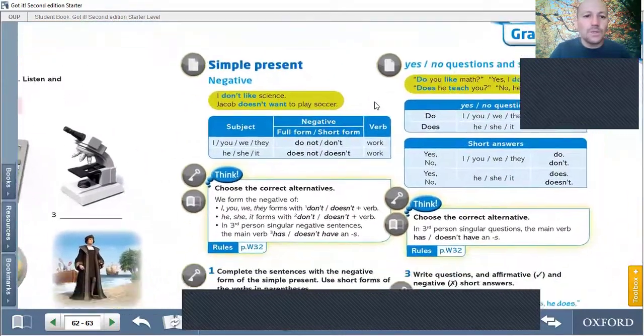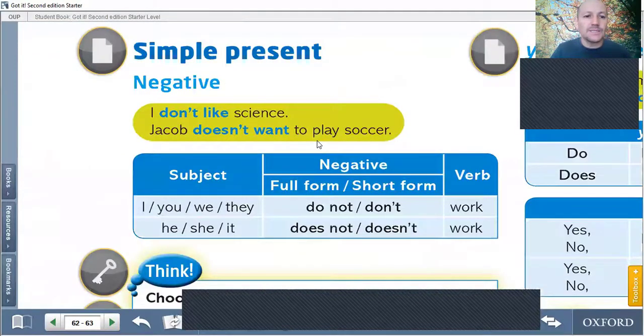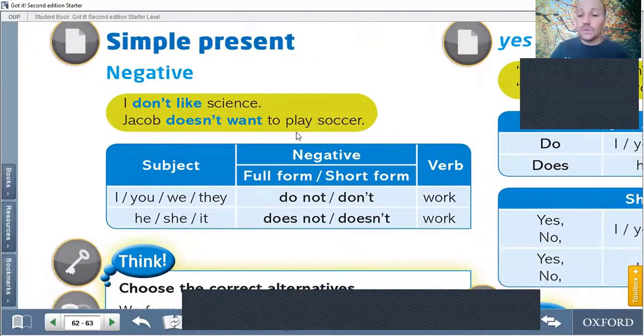Then we're going to see the simple present, the negative form and we use don't and doesn't. We use don't for the I, you, we, they subject and we use doesn't for he, she, it. And then the verb. For example, I don't work. For example, she doesn't work. Okay, very good.